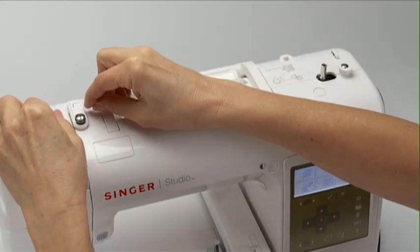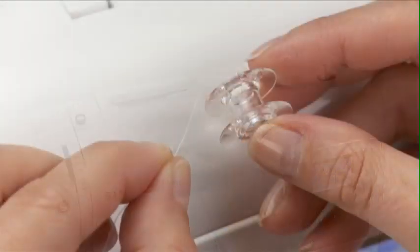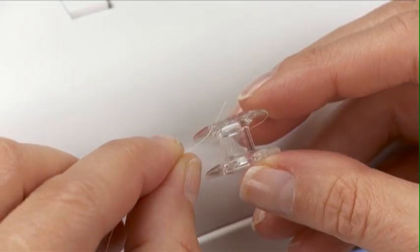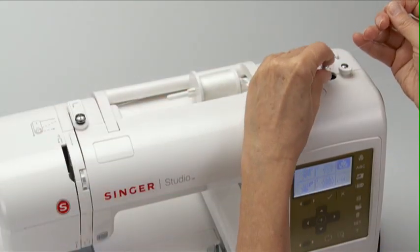Hold the thread and slip it under and around the tension disc. Insert the end of the thread through the hole of the bobbin from the inside. Place the bobbin onto the bobbin winder spindle and push it to the right.